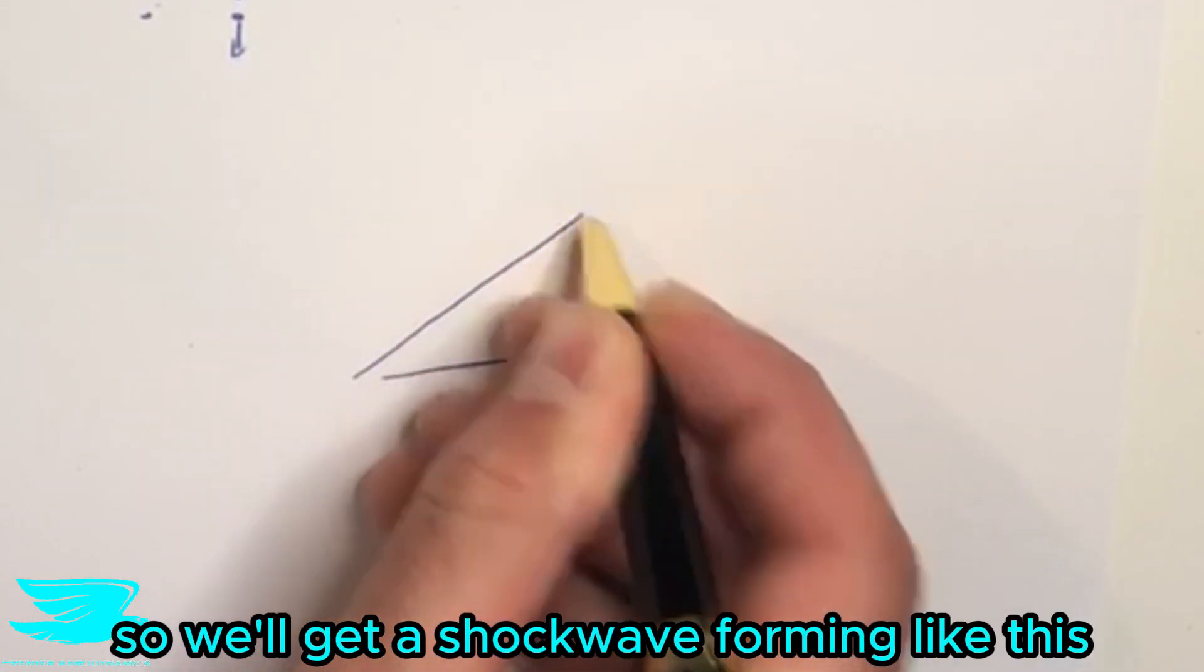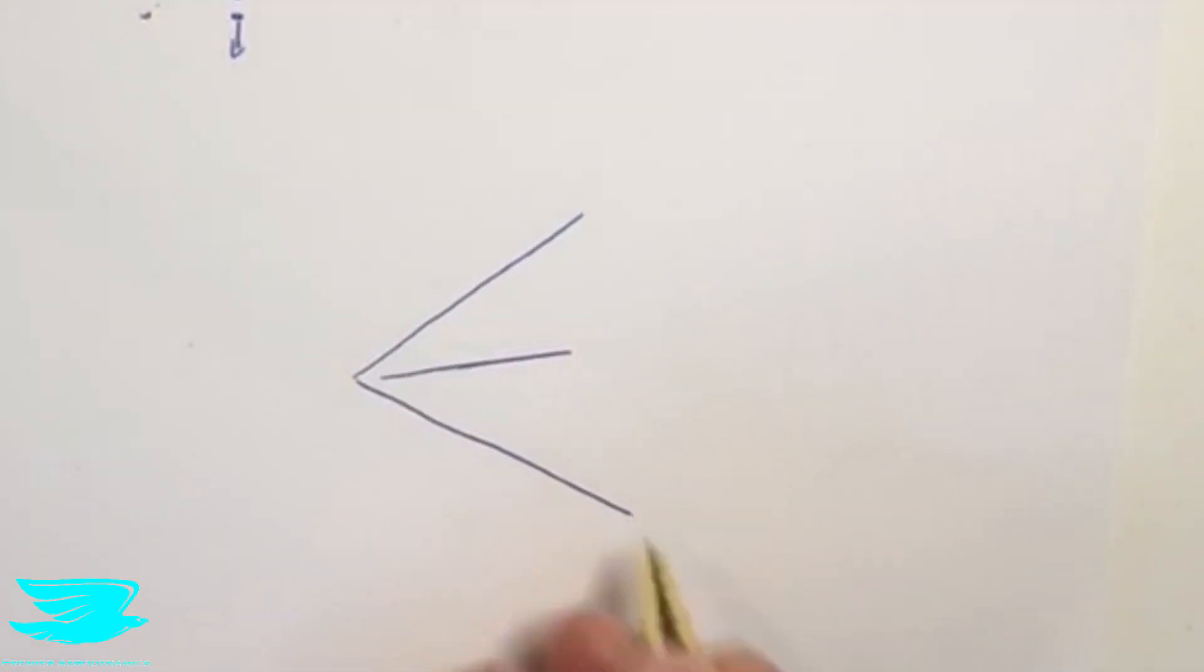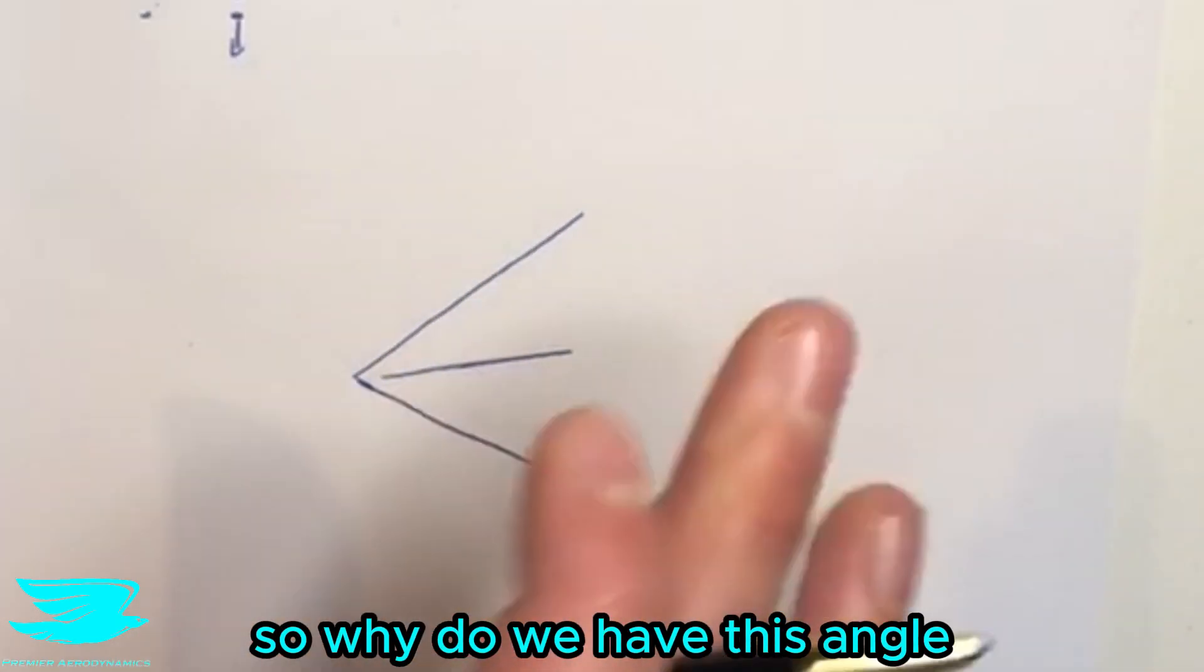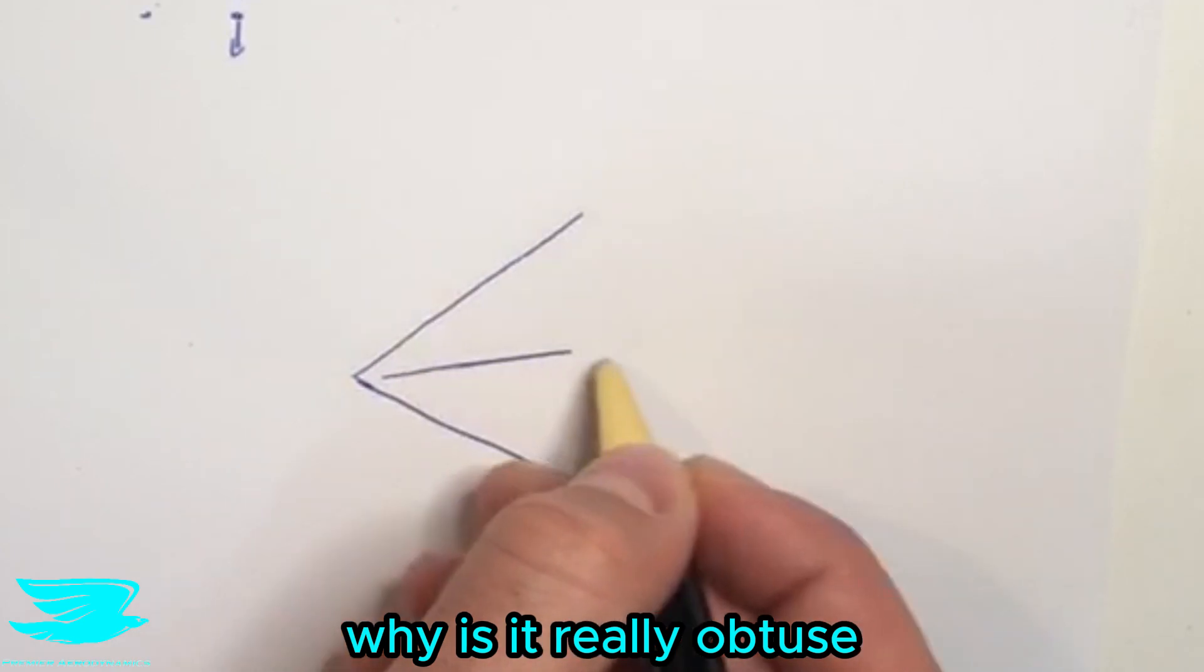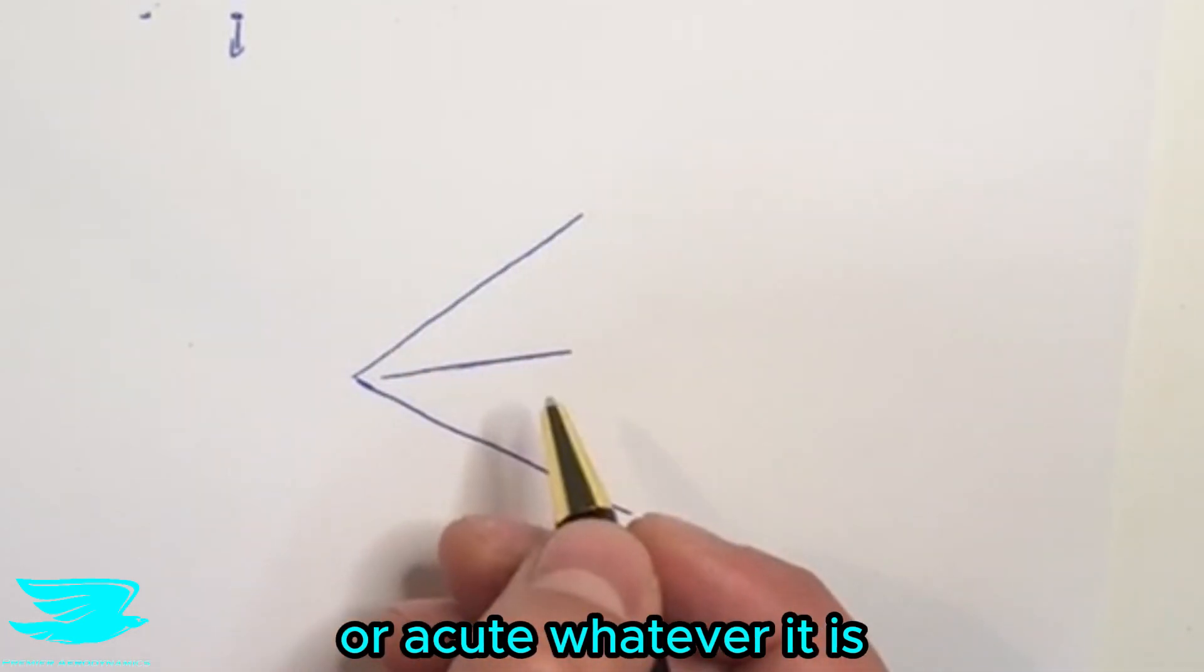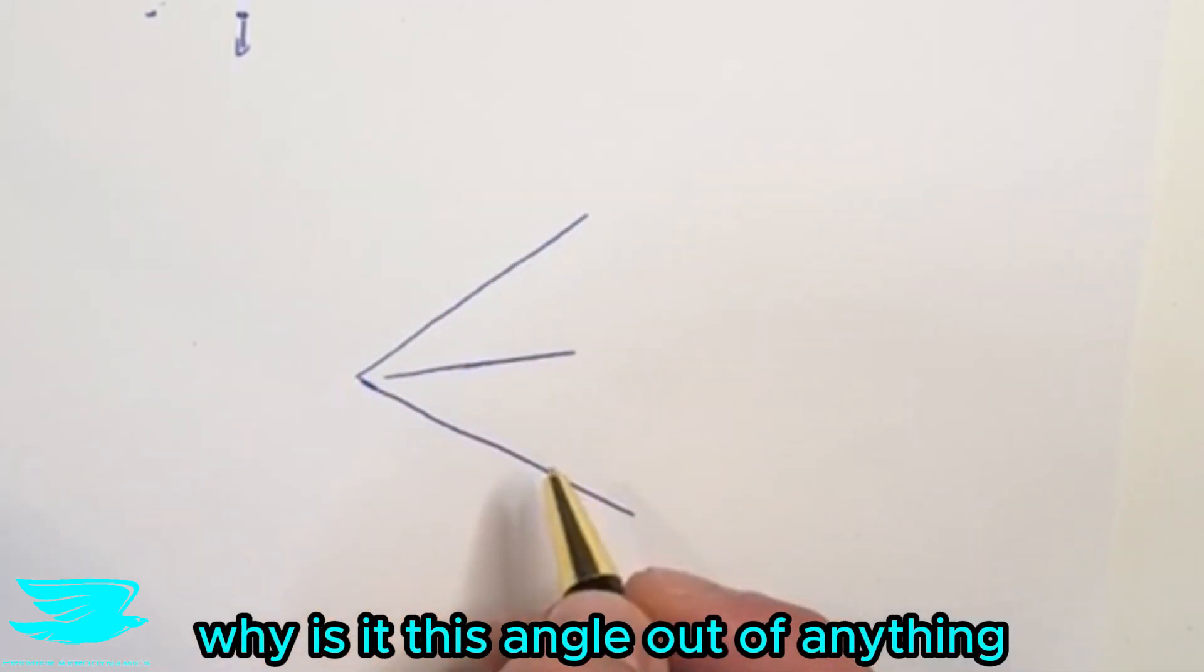But there is still usually going to be some sort of shock forming on it. Usually it will be at an angle, so we'll get a shock wave forming like this. So why do we have this angle? Why isn't it just flat? Why is it really obtuse or acute? Whatever it is, why is it this angle out of anything?